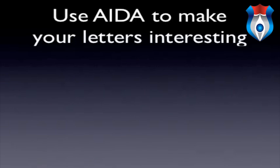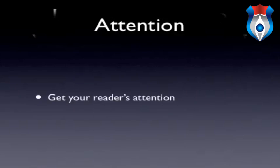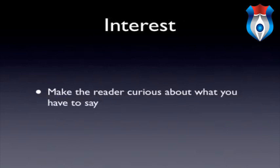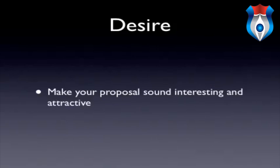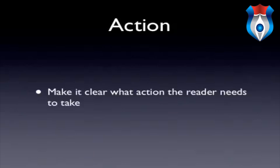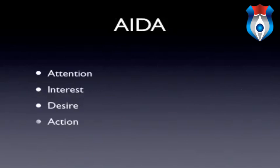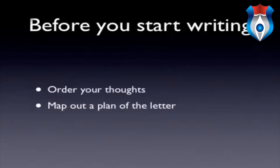Use AIDA to make your letter interesting. A means Attention — get your reader's attention. I means Interest — make the reader curious about what you have to say. D means Desire — make your proposal sound interesting and attractive. And the final A means Action — make it clear what action the reader needs to take. That's AIDA: Attention, Interest, Desire, Action — a very good way to write a business letter. Before you start writing, spend some time getting your thoughts clear and put them into a logical sequence; make a little plan of the letter before you start.